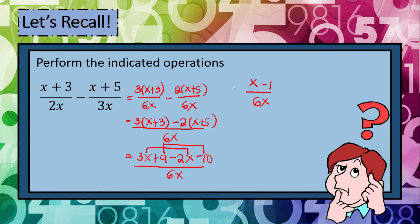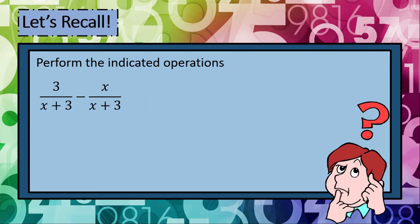Since we cannot simplify this anymore, our answer is x minus 1 all over 6x. Let's try example number 3: We have 3 over x plus 3 minus x over x plus 3. Since they have the same denominator, we just proceed in subtracting the numerator. We can now write it as 3 minus x all over x plus 3.